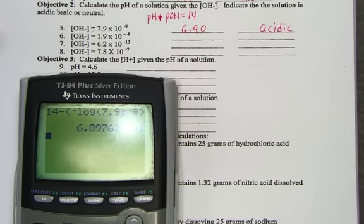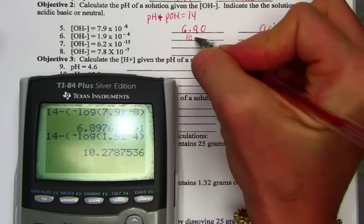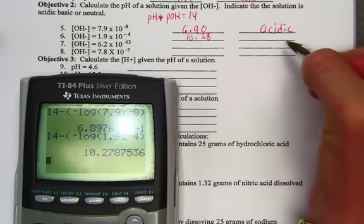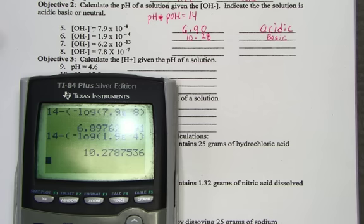Hitting again for the letter B, I would hit 14 minus, and then I do the parenthesis, negative log of 1.9 E negative 4. 14 minus the pOH of our solution turns it into a pH, and we get 10.28 pH units. And that number is above 7, so we call it basic.